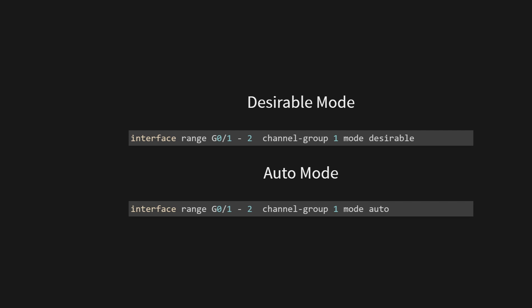Channel group 1 designates that these interfaces will be bundled together into a port channel, using the number 1 to identify it — consistency across devices is essential. Mode auto sets the port channel negotiation mode to auto. Unlike desirable mode, auto means the interface will passively wait for the other end of the link to initiate negotiation. When you execute this command, GigabitEthernet 0/1 and GigabitEthernet 0/2 are combined into port channel 1 using auto negotiation mode.